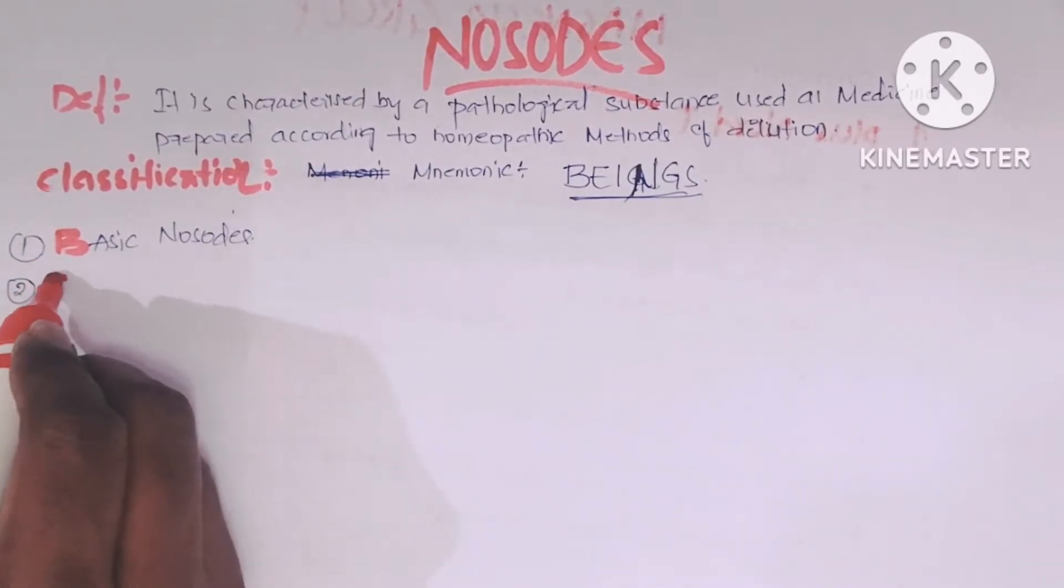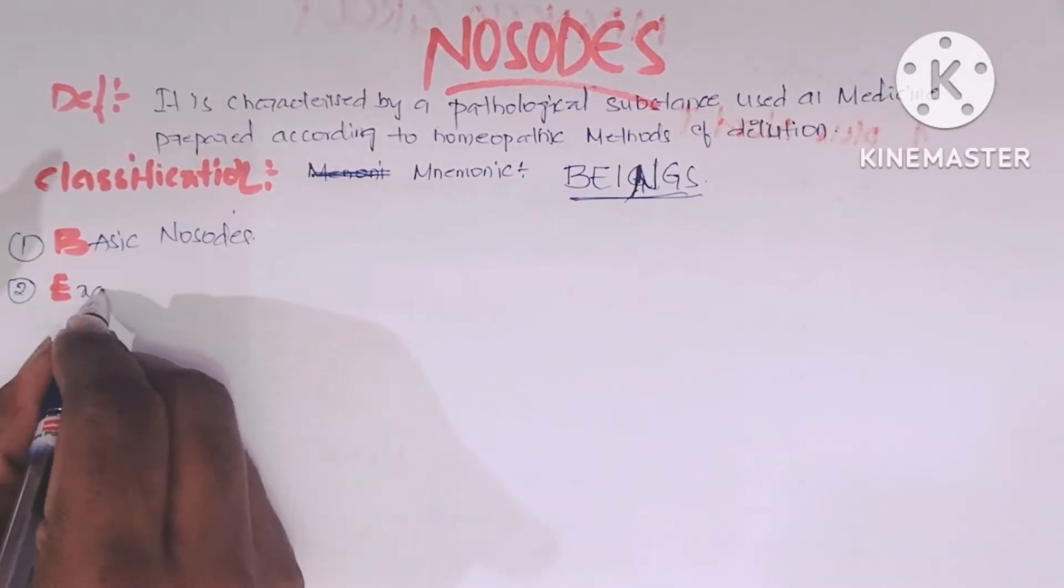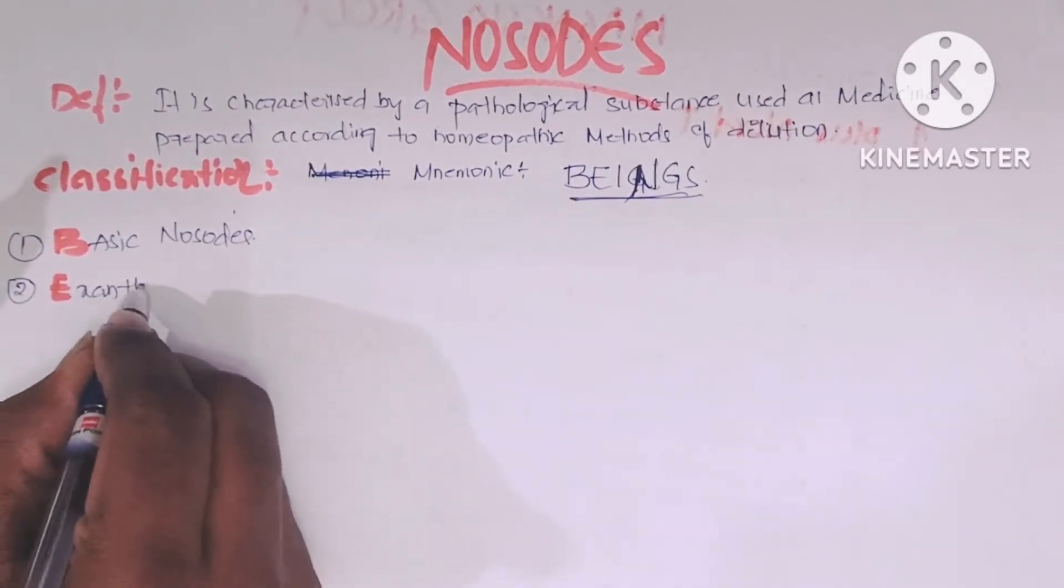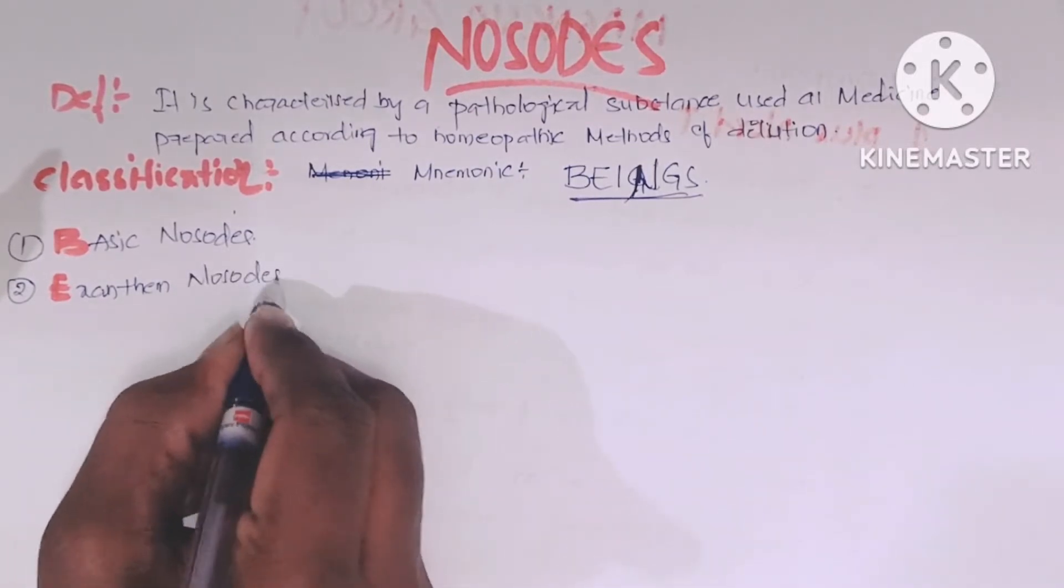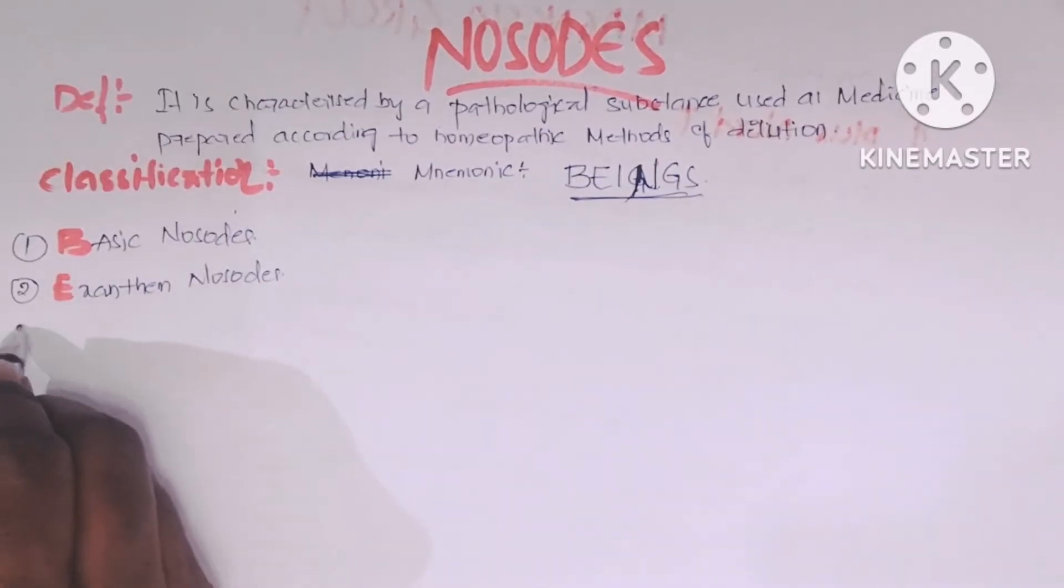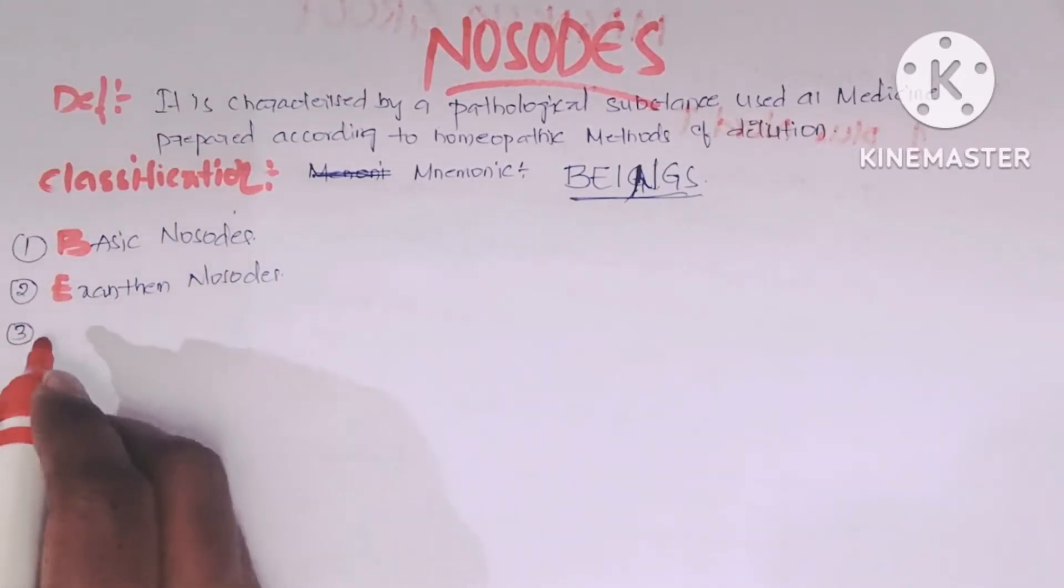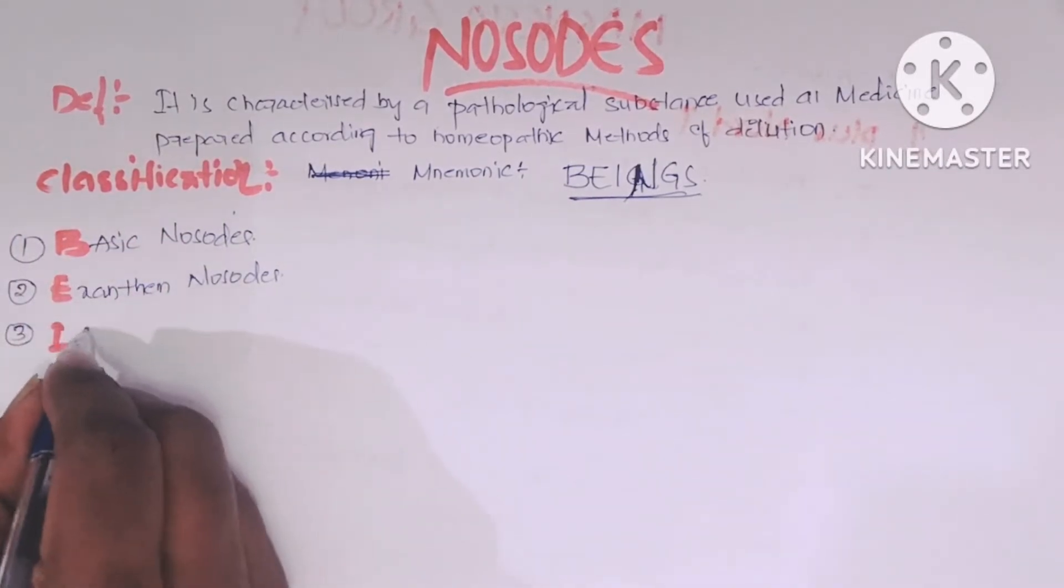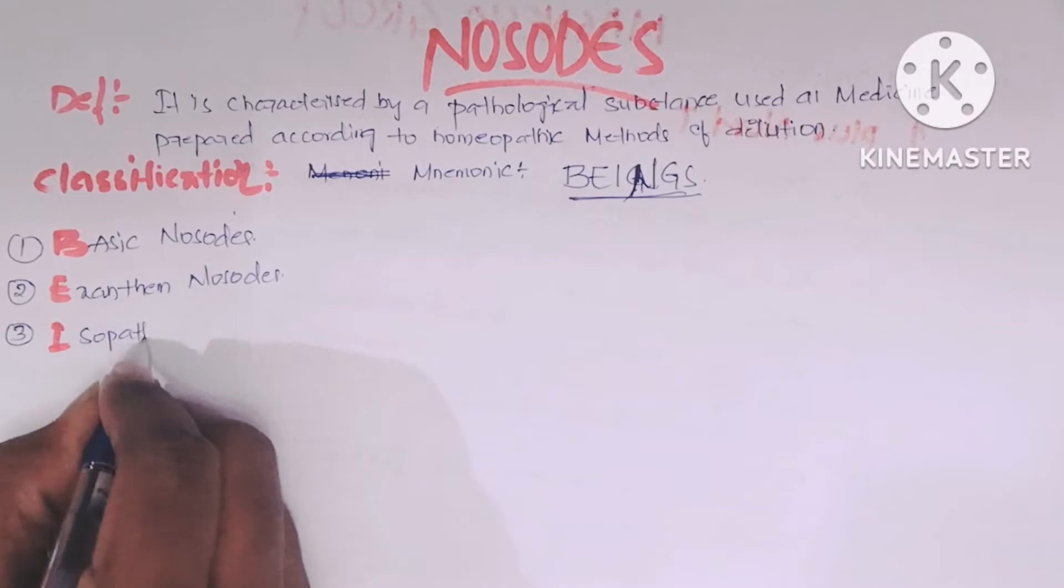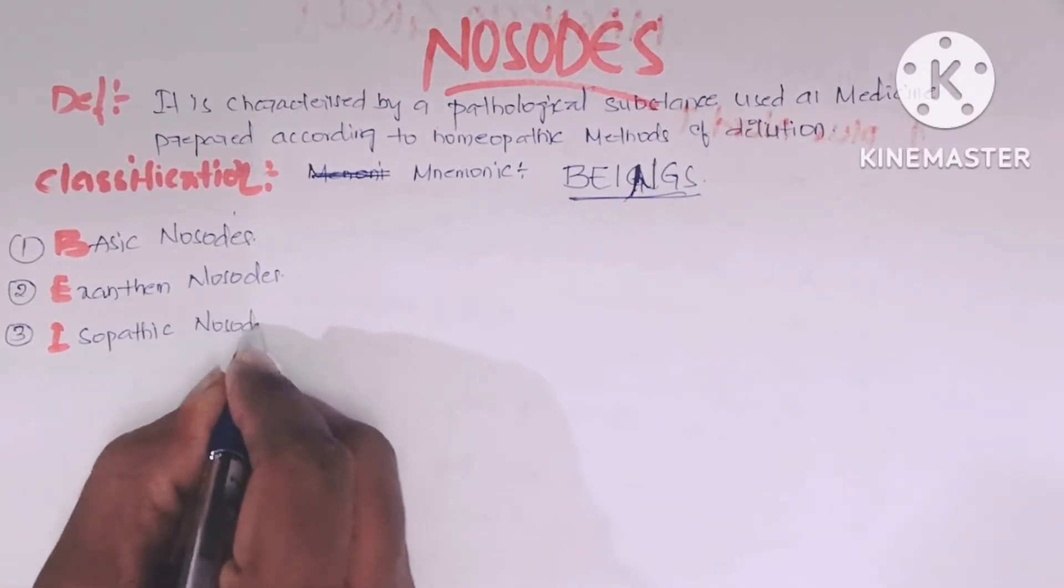The second one is E for Exanthema nosodes. The third is IN: Intestinal nosodes and Isopathic nosodes.